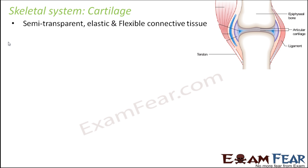So what is a cartilage? Cartilage is a semi-transparent, elastic, and flexible connective tissue. Now, like bones are totally hard and not at all flexible, cartilage on the other hand is elastic and flexible, so it is not as hard as bones.